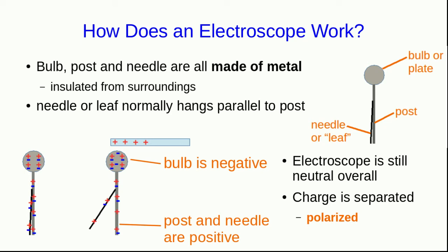Incidentally, we can do the same thing with a positive charge, and the opposite will happen. It will pull electrons up from low on the electroscope into the bulb. So, now the bulb will be negative, and the post and needle will be positive. And again, they'll repel each other.